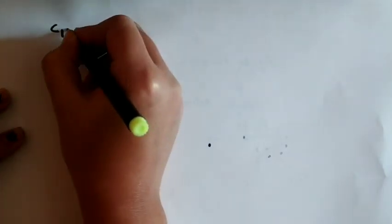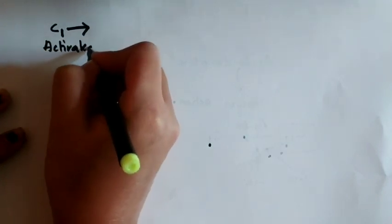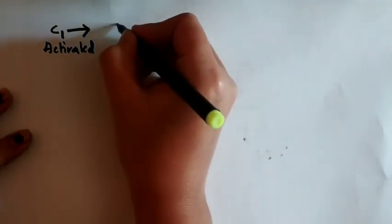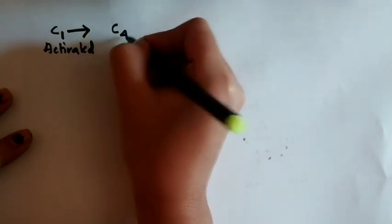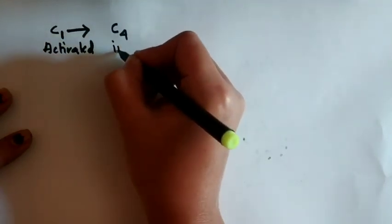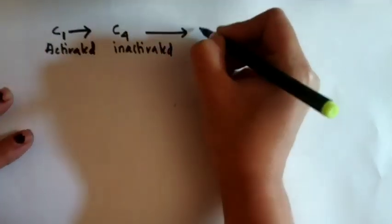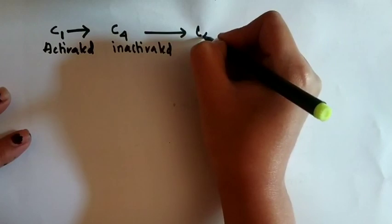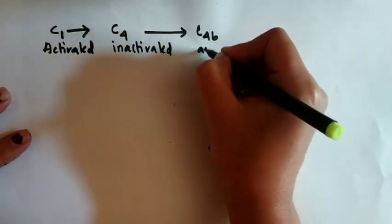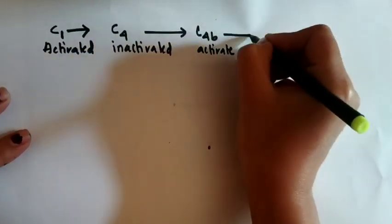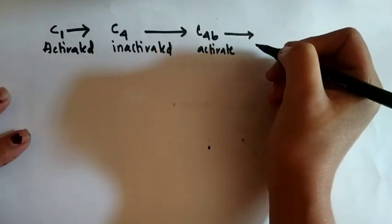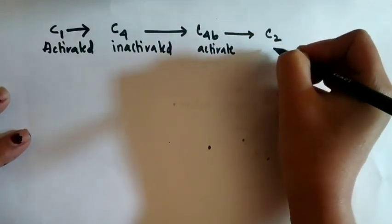After the activation of the C1 molecule, it will undergo the classical pathway. This activated C1 molecule will act on inactivated C4 and C2 molecules, forming activated C4B molecule. Again, this activated C4B will act on the C2 molecule.